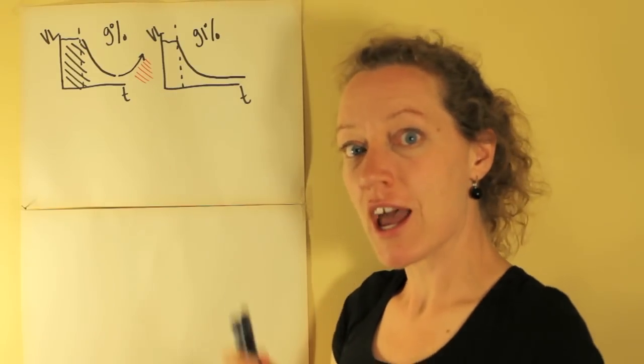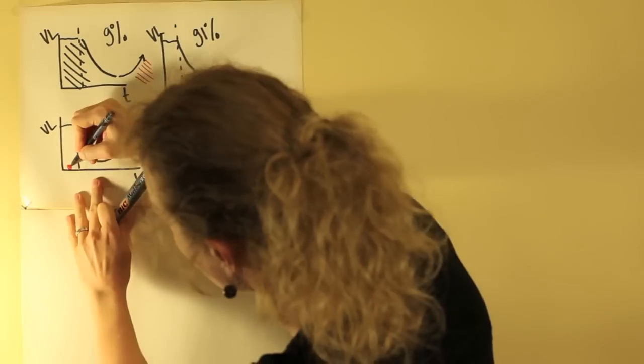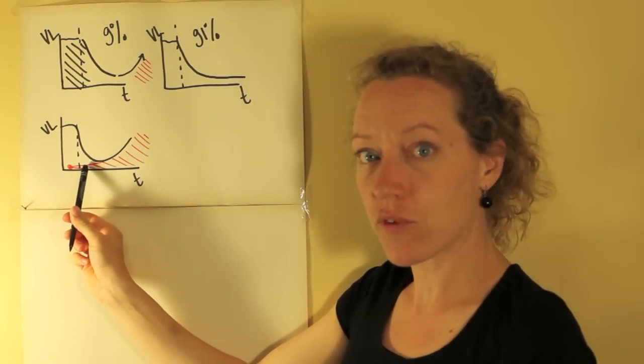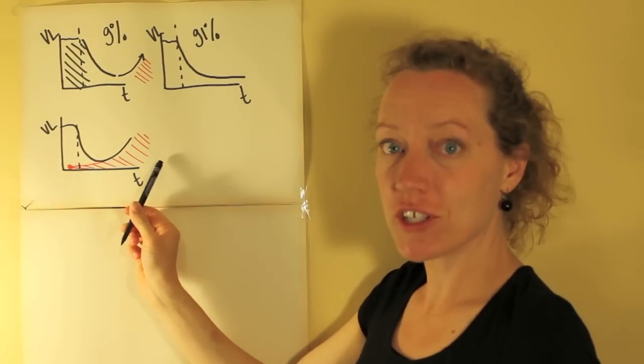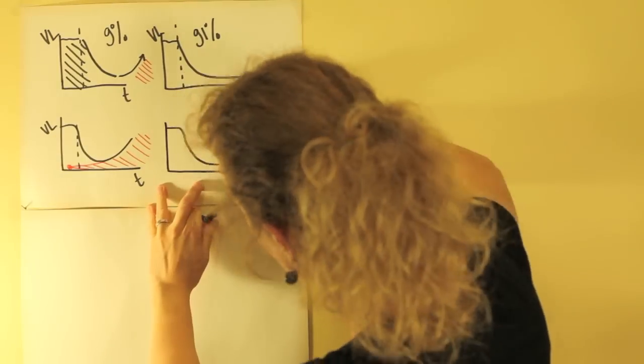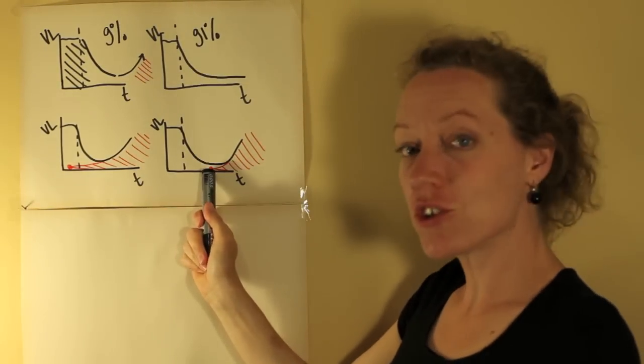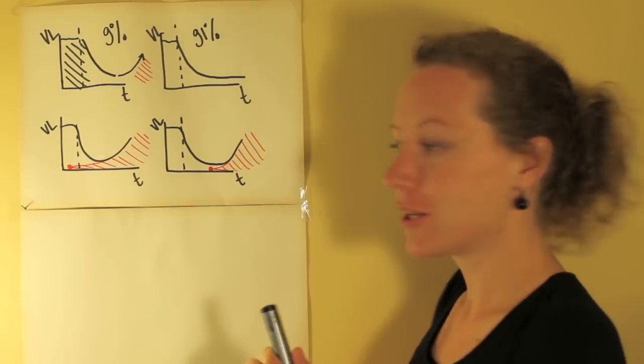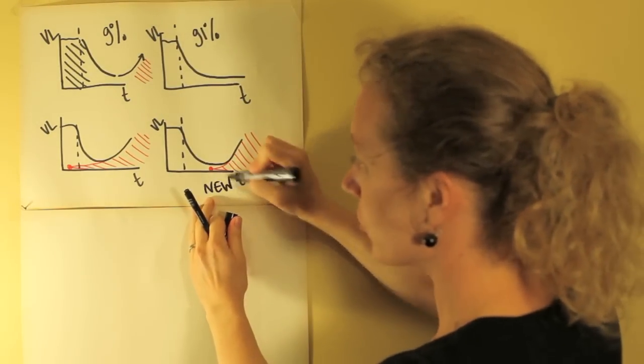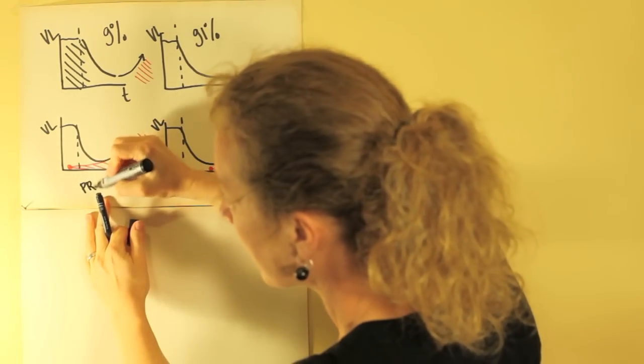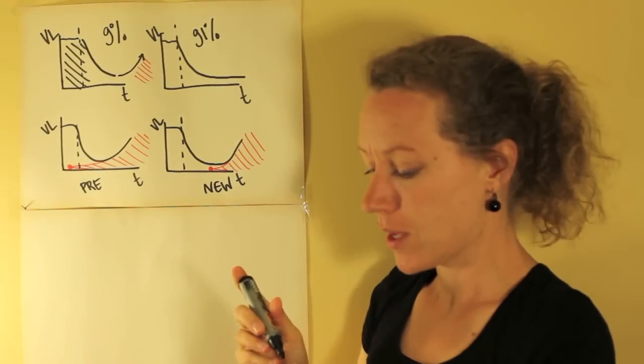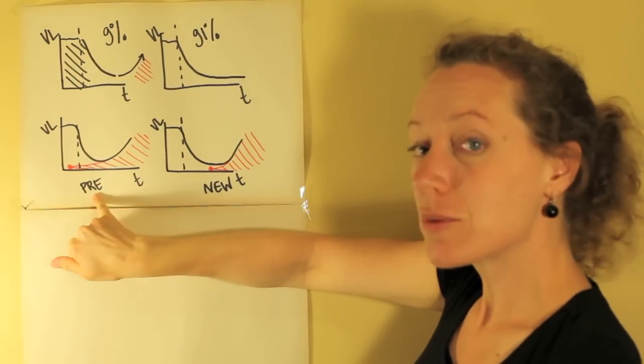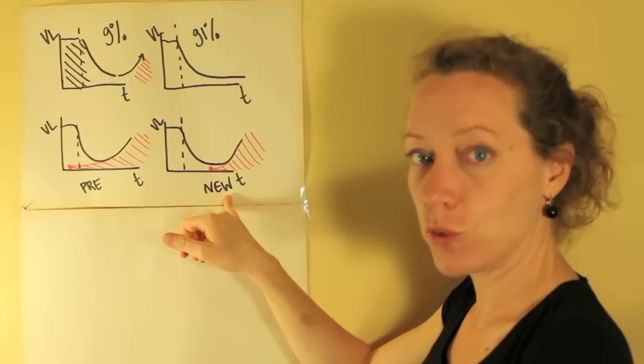So there are two options: either the mutation occurred here before treatment started, was undetectable for a while, and then took over the population and led to resistance. Or the mutation occurred during treatment and immediately took over the population and caused resistance. In this case we call it a new mutation. In this case we call it a pre-existing mutation. And I wanted to know for this nine percent of the patients, in how many of them were pre-existing mutations responsible and in how many of them were new mutations responsible.